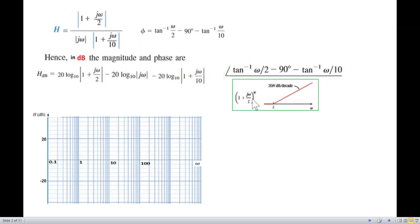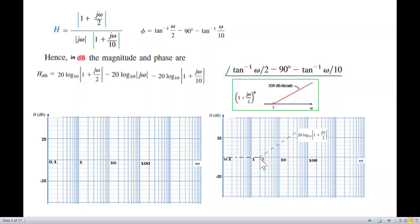This is the corner frequency, divided by Z and divided by P. The corner frequency is 2, and the slope is 20 dB per decade. 10 times gives 20, so one decade changes by 20 dB.